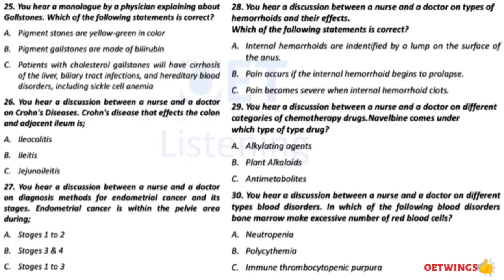Question 26. You hear a discussion between a nurse and a doctor on Crohn's disease. What are the different types of Crohn's disease? Well, Crohn's disease is a chronic, incurable disease that can cause inflammation anywhere along the digestive tract. It is characterized by symptoms of abdominal pain, diarrhea, cramping, weight loss, bloating, and blood in stools. The most common types are: Ileocolitis affecting the colon and adjacent ileum, Jejunalitis affecting the jejunum, Ileitis affecting the ileum, Crohn's granulomatous affecting the colon, and Gastroduodenal Crohn's disease affecting the stomach and adjacent duodenum.